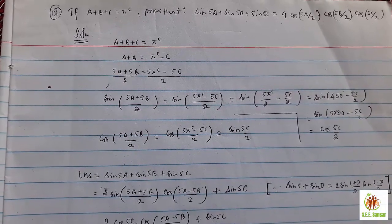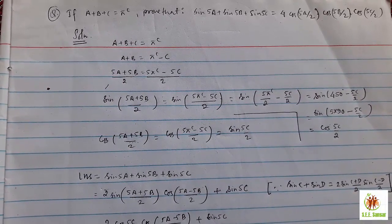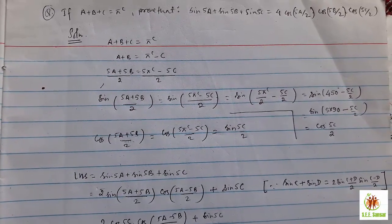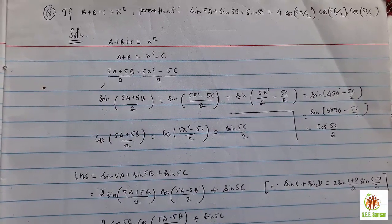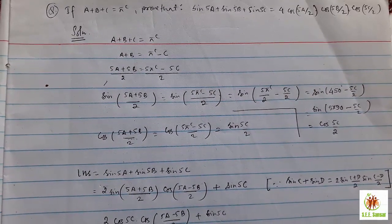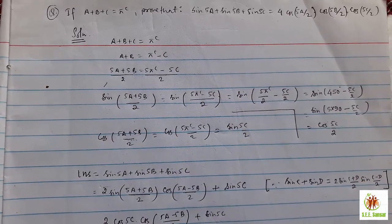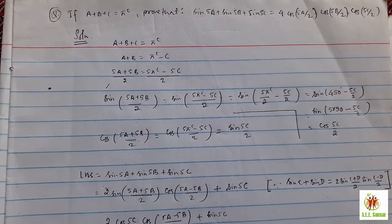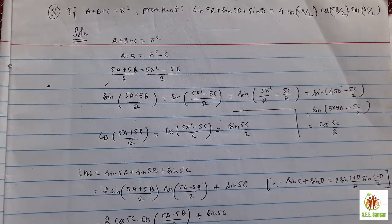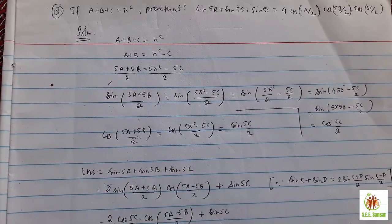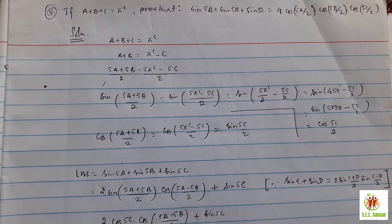So here I have come with the problem on conditional identities. It is from optimal mathematics trigonometrics chapter. Look at here. The given condition is a plus b plus c equal to π and we have to prove that sin 5a plus sin 5b plus sin 5c equal to 4 cos 5a upon 2 cos 5b upon 2 cos 5c upon 2. This is another typical problem.